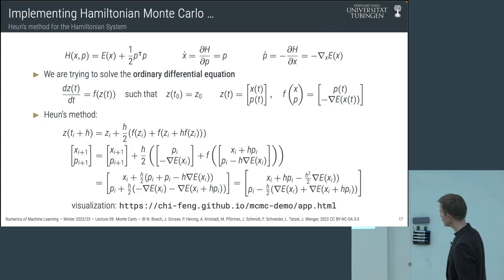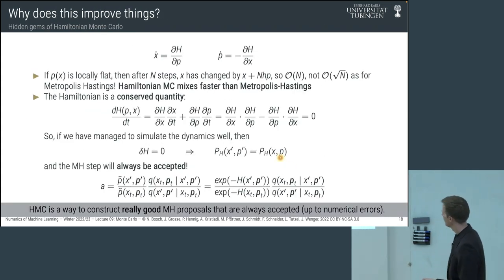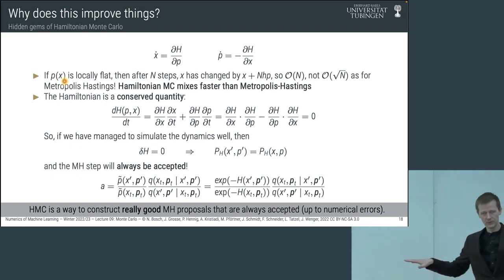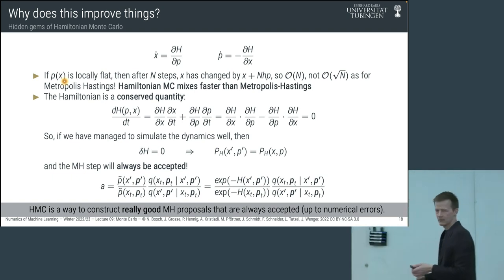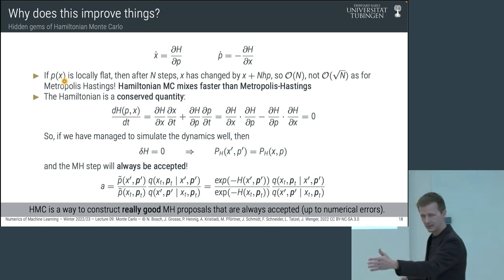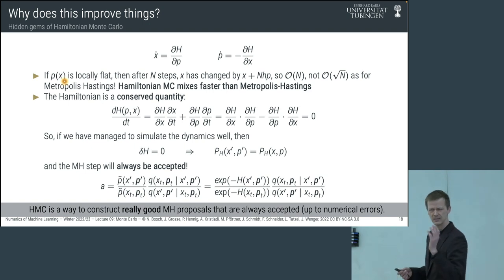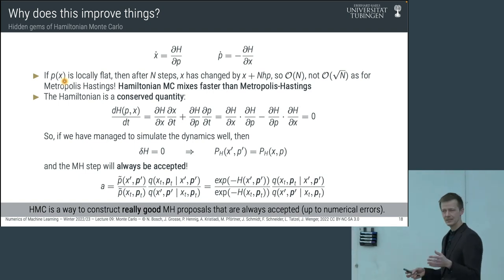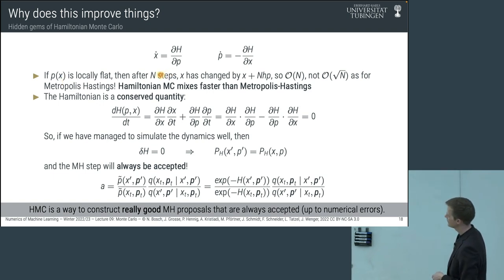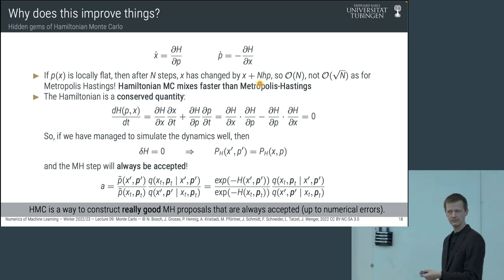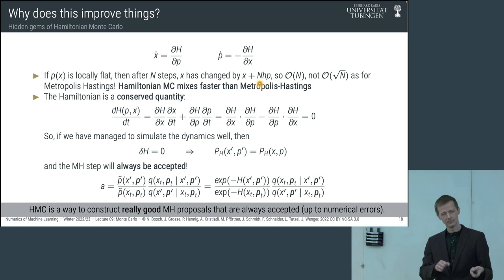So notice how this is a bit like Adam for optimization — it has parameters like learning rate, epsilon, beta 1, beta 2. This algorithm also has two parameters: they are called leapfrog steps — the number of steps the solver takes — and the step size.